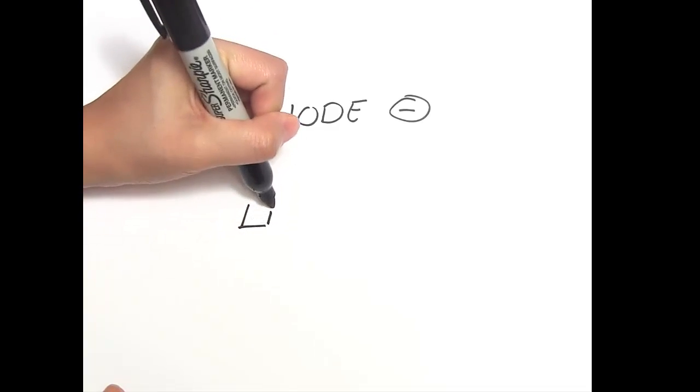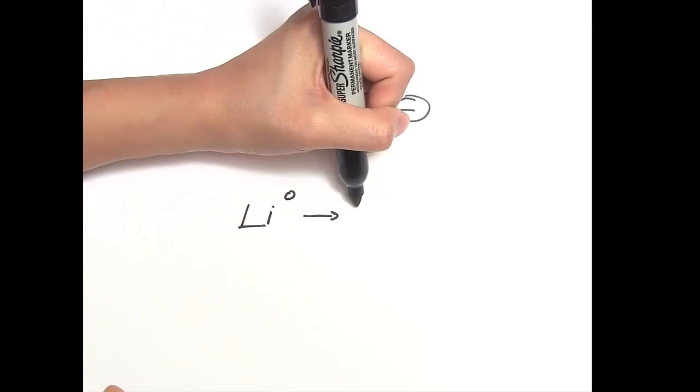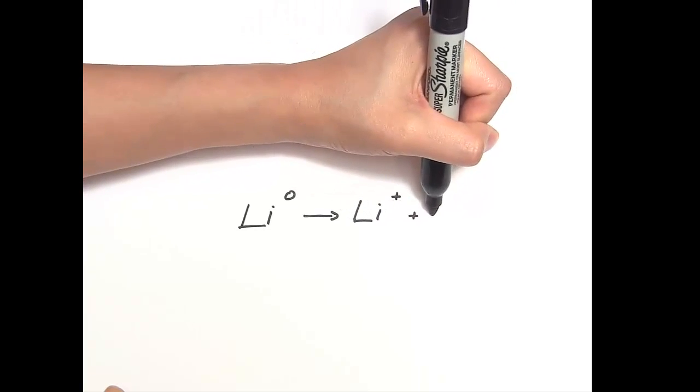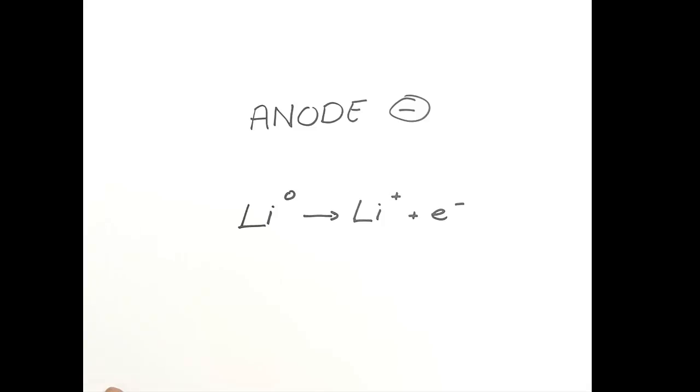So, here's the chemical reaction that's happening at the anode. Lithium metal loses one electron to form lithium ion. And when you lose electrons in a reaction, it's called an oxidation reaction.